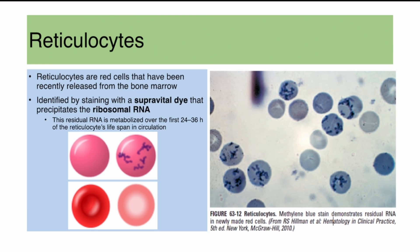Reticulocytes are red cells that have been recently released from the bone marrow. They can be identified by staining with supravital dye that precipitates ribosomal RNA, or with methylene blue stain. They appear blue with a reticular appearance due to the residual RNA.